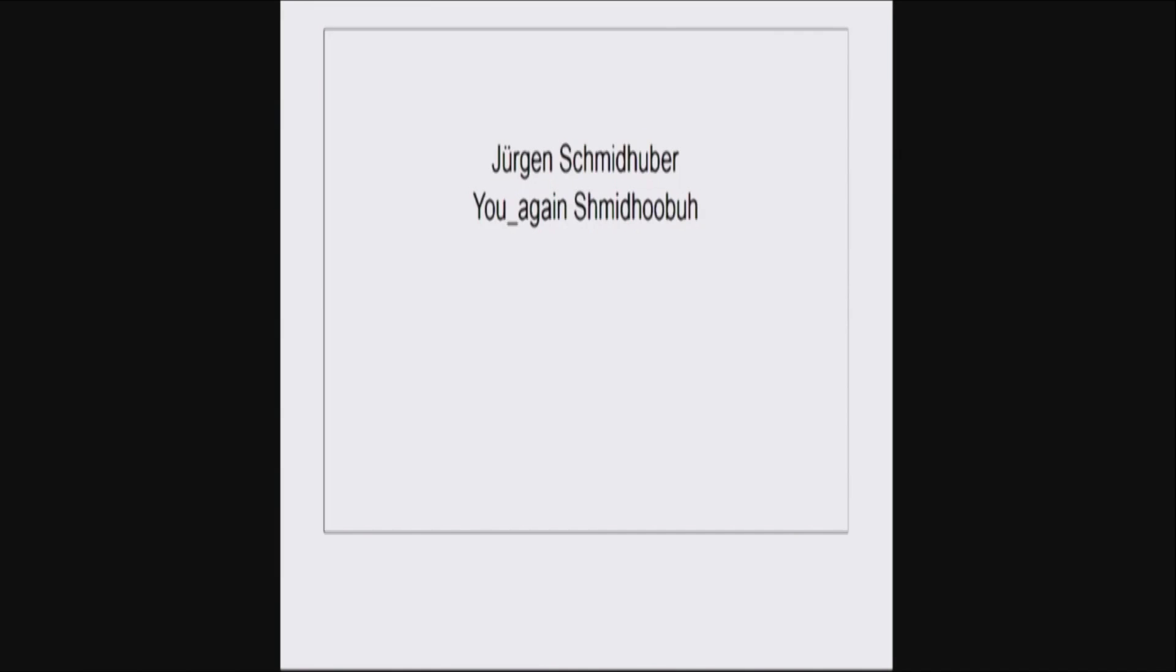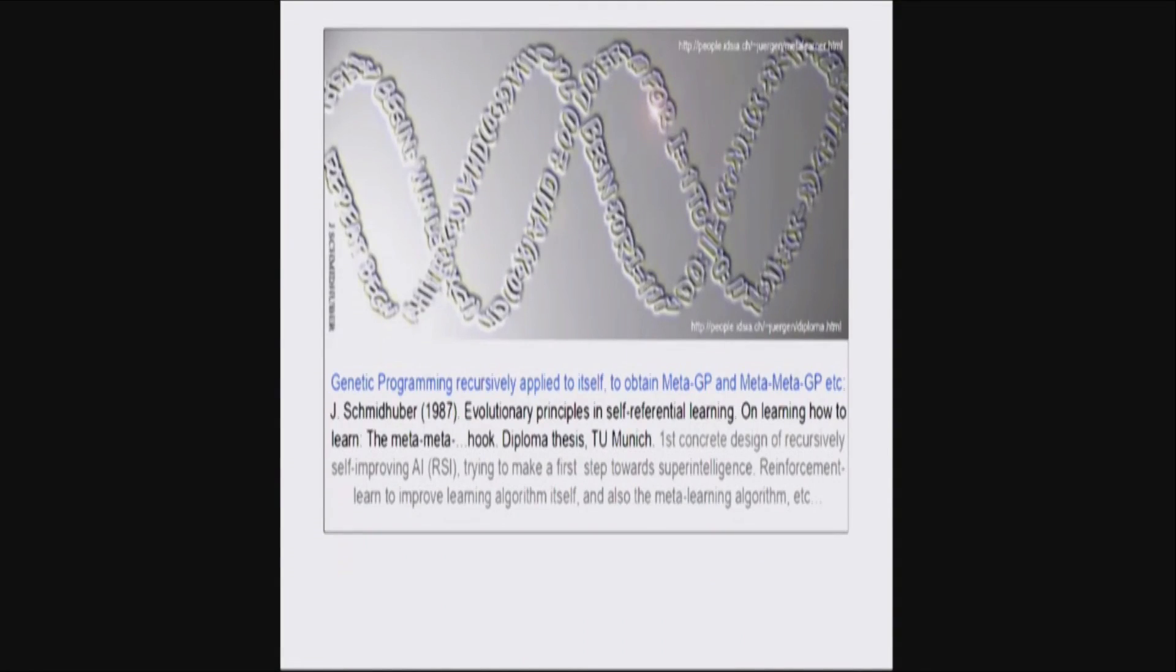And the basic approach is always the same. In principle, we are doing similar things as what we did back then. You start with a general purpose computer and you have a universal programming language that allows you to implement arbitrary learning algorithms. And then you need some sort of force that makes sure that the learning algorithms that you are testing are getting better and better over time. And back then, I used a concept which was first published by Kramer in 1985, genetic programming, which is just genetic algorithms applied to programs.